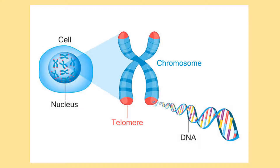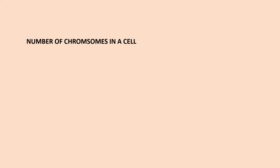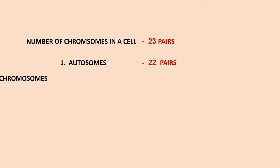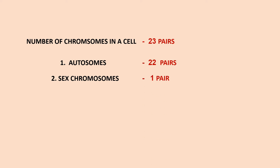In every human cell there are 23 pairs of chromosomes. Among these 23 pairs there are two types: one is autosomes — there are 22 pairs of autosomes which build up all the organs in our body — and the second type is sex chromosomes, which are one pair. This one pair has two types: X and Y, and together they decide sex determination.